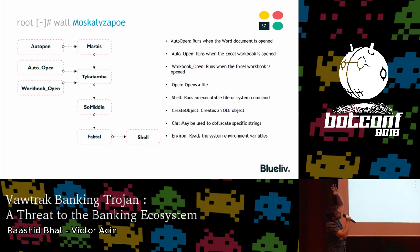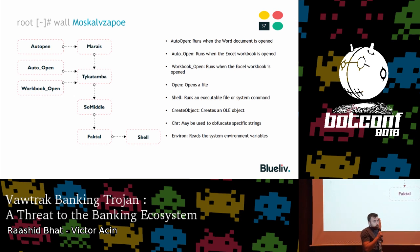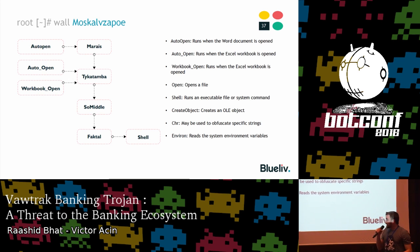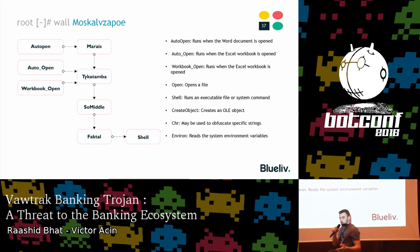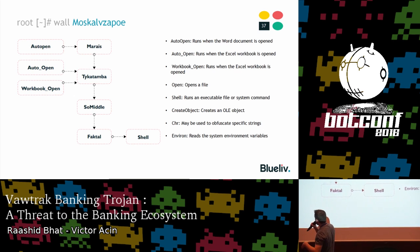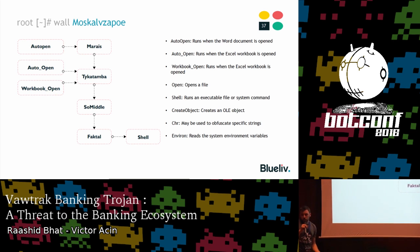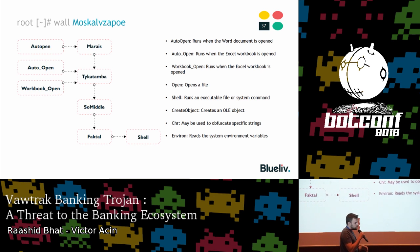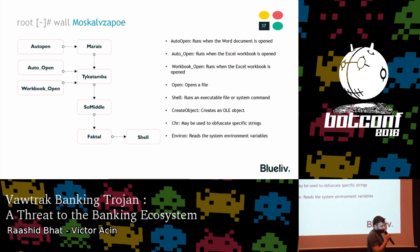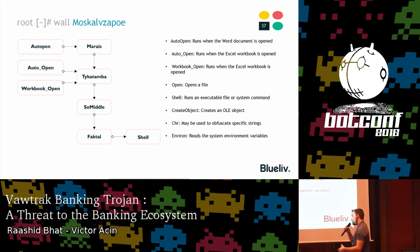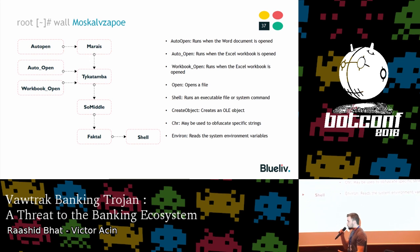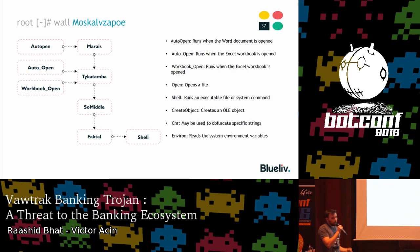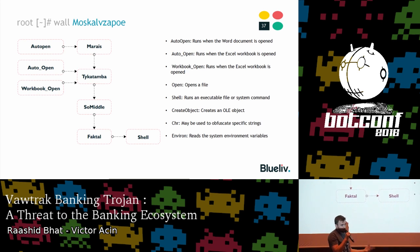These three functions end up in another function called Tikatamba, which configures three different paths in the infected computer's temporary directory pointing to an RTF file. It then calls SawMiddle, a wrapper for SaveAs. This exploits Microsoft Office's behavior when transforming documents: since DOCX can hold more information than RTF, when saving as RTF, Office extracts files found inside the DOCX document and stores them in a temporary directory.